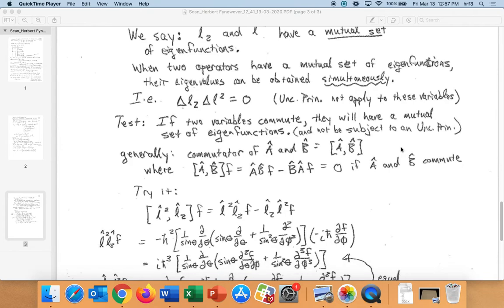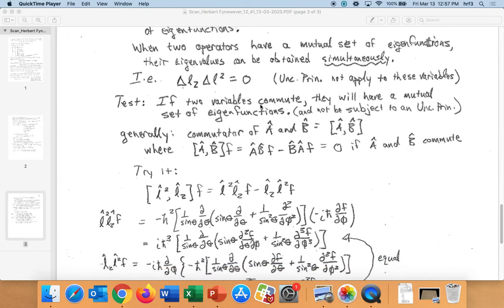And here's, in general, a test. If two variables commute, and I'll define what that is in a second, then they will have a mutual set of eigenfunctions and not be subject to the uncertainty principle. So generally, we have this thing called the commutator. If we're just thinking symbolically here of some operator â and b̂, we denote the commutator as square brackets around these two with a comma in between. What this notation means is, for some function f, the commutator of a and b of f is âb̂f minus b̂âf. This will be equal to zero if â and b̂ do commute.